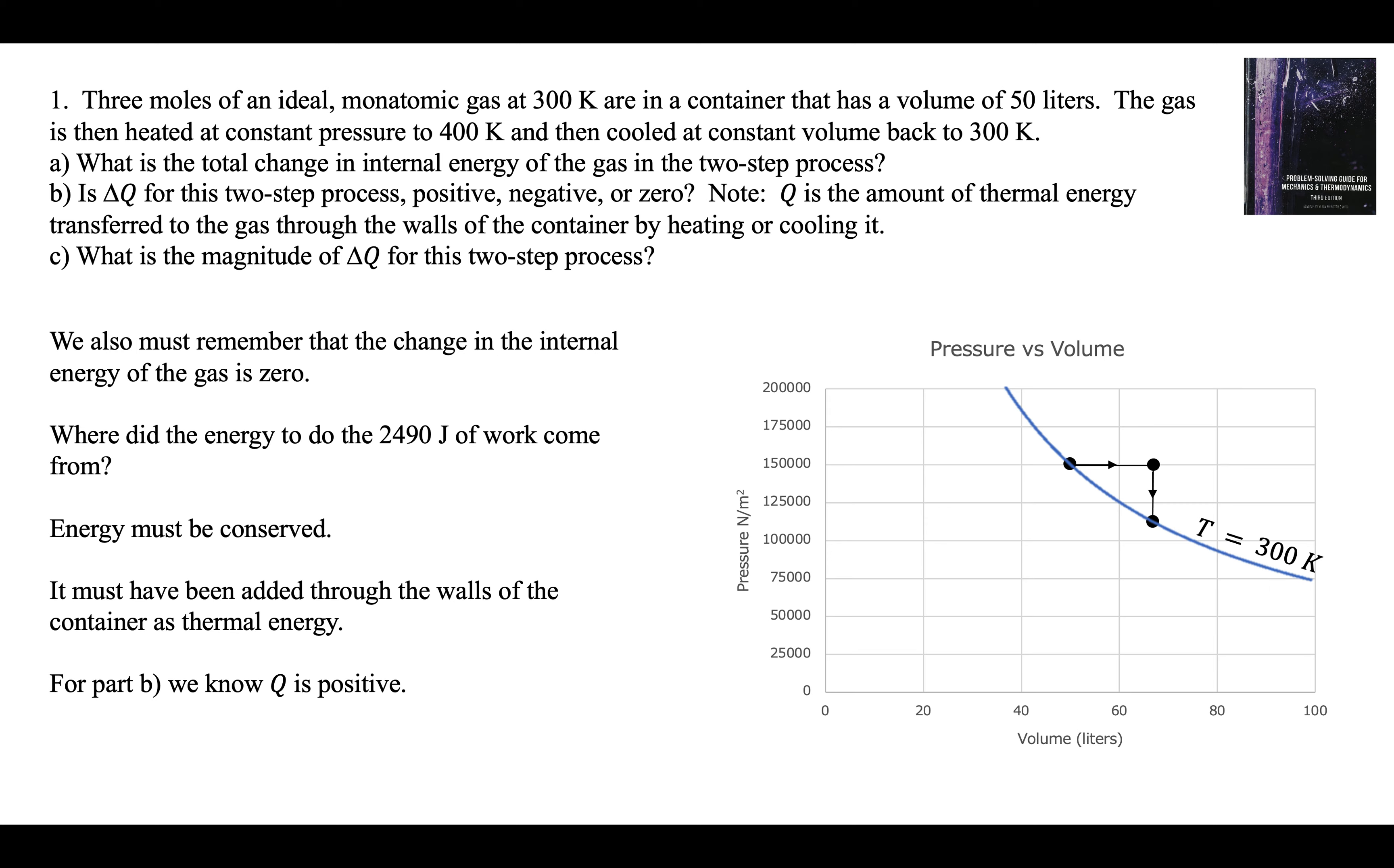So for part B, we know Q is positive because the gas did work and it's at the same temperature. And for part C, it's got to be 2490 from conservation of energy.